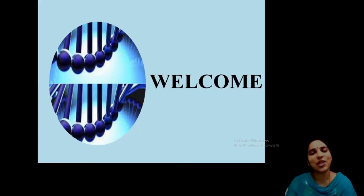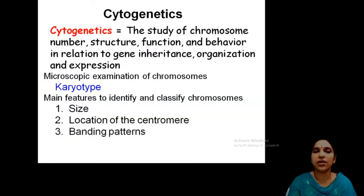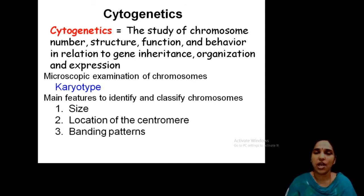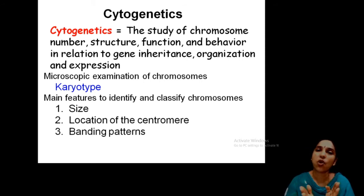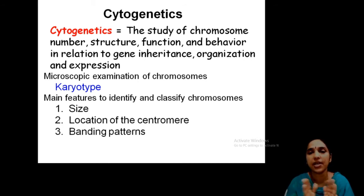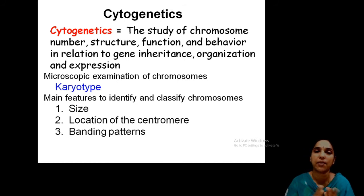Good morning, children. Let us come back to our cell biology classes. Today we will study a new topic: karyotype. In the last class, we discussed banding patterns — how to band chromosomes, the different types of banding techniques, and their significance. The study of chromosome structure, function, and behavior in relation to gene inheritance is known as cytogenetics, and we need special techniques like banding and karyotyping to study it.